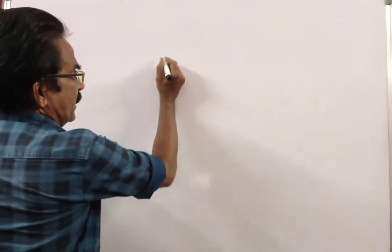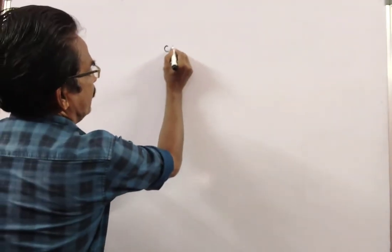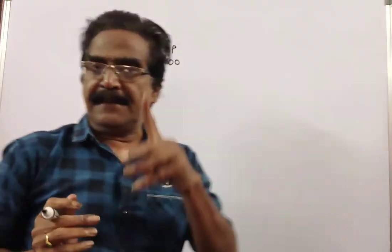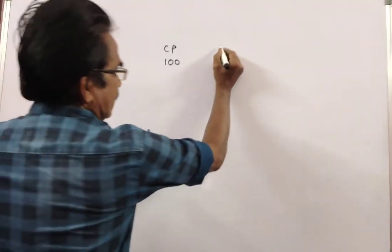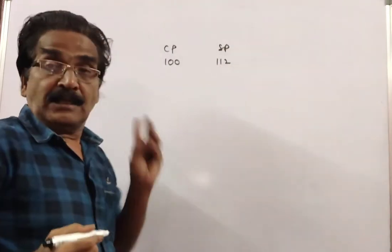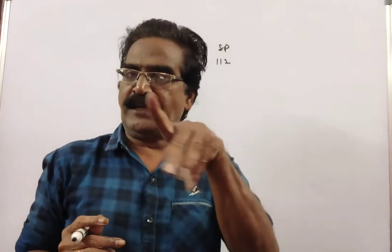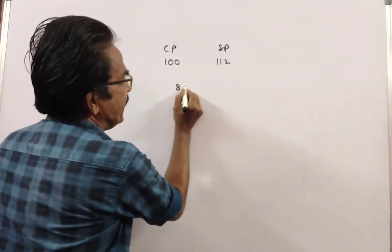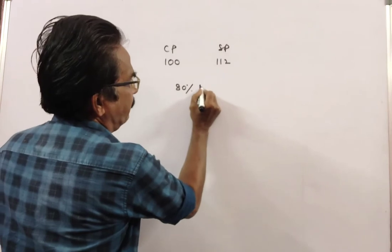See friends, say cost price is 100. He makes a profit of 12%, that is, the sold price is 112. This sold price of 112 is after allowing a discount of 20%. So this 112 is 80% of the market price.